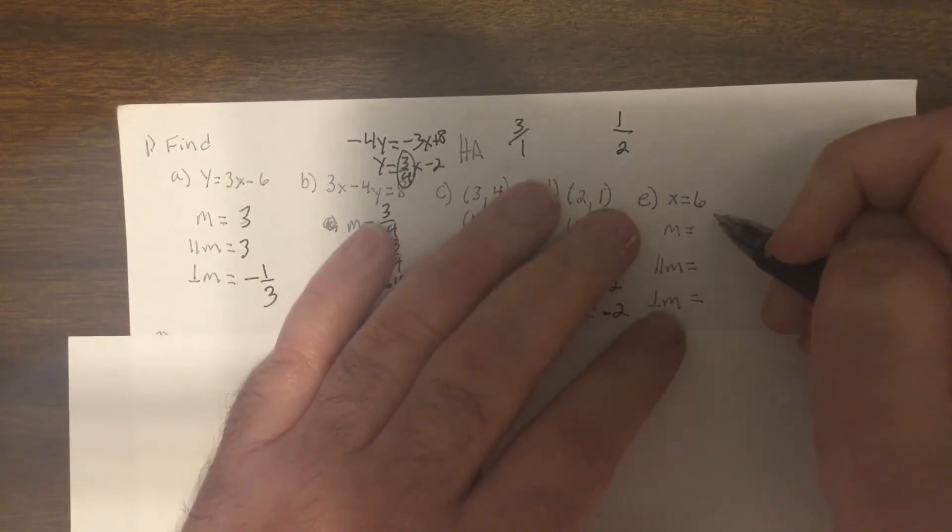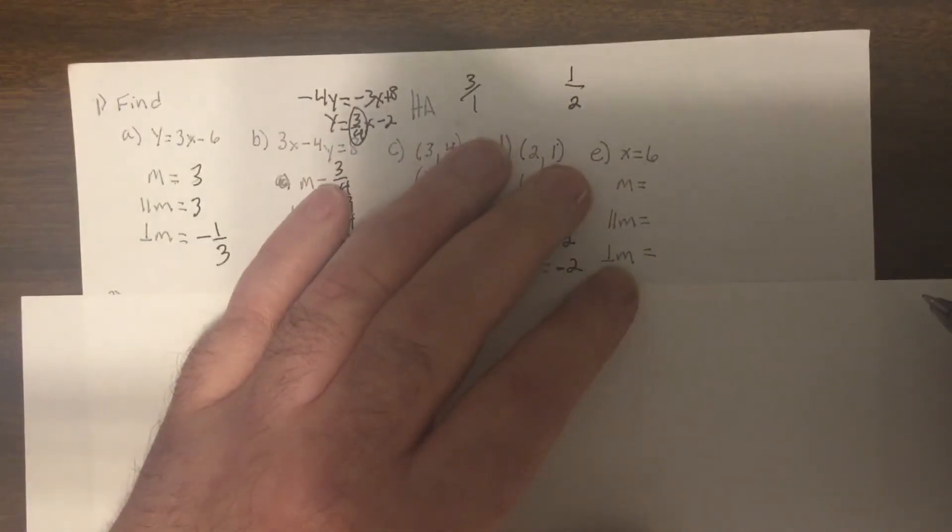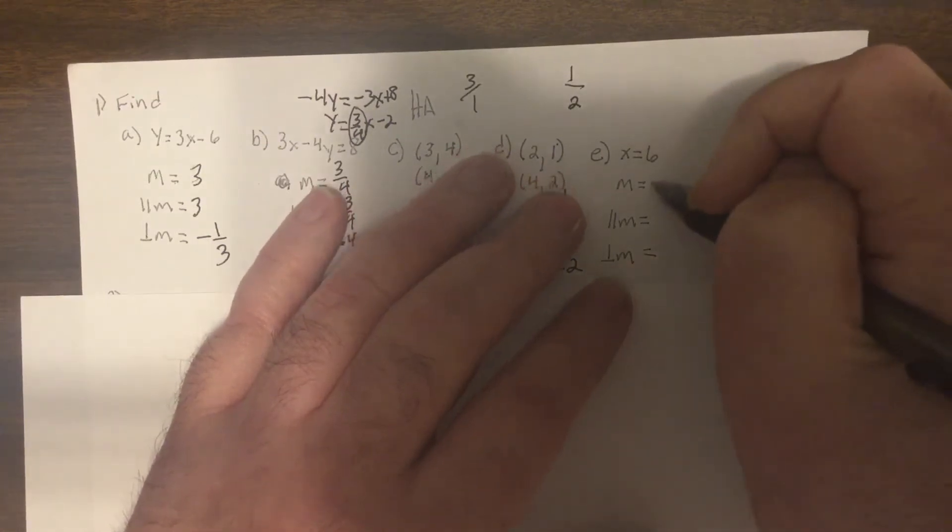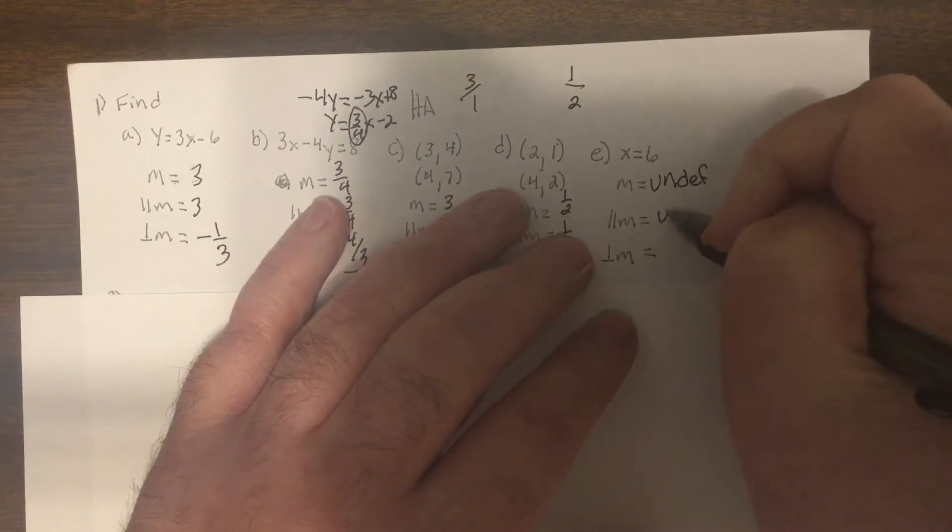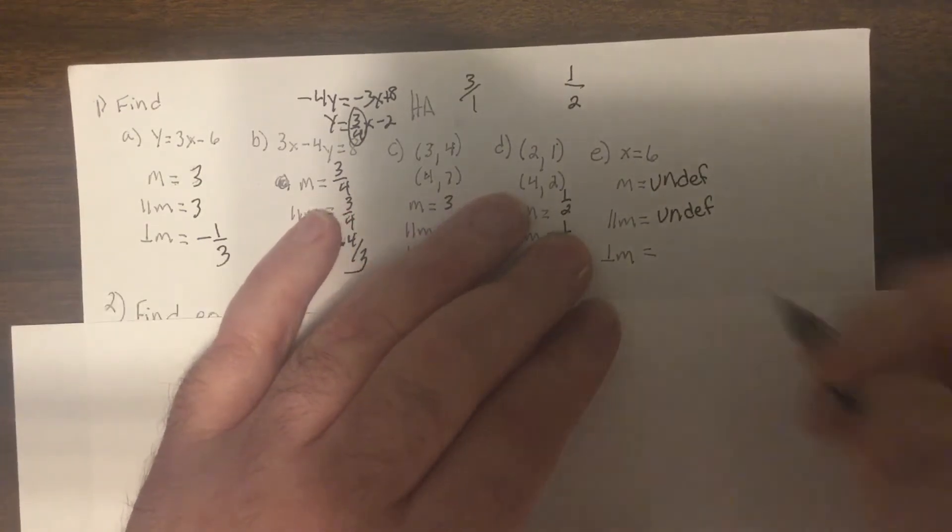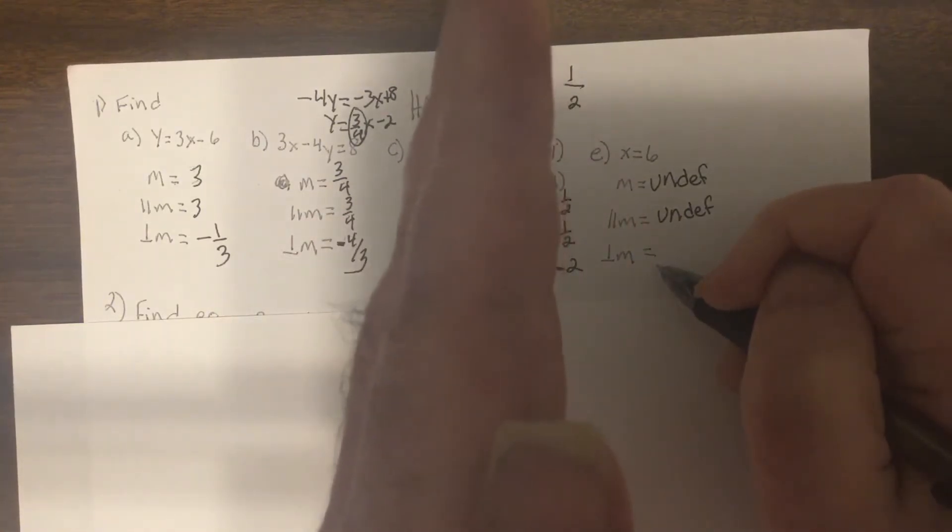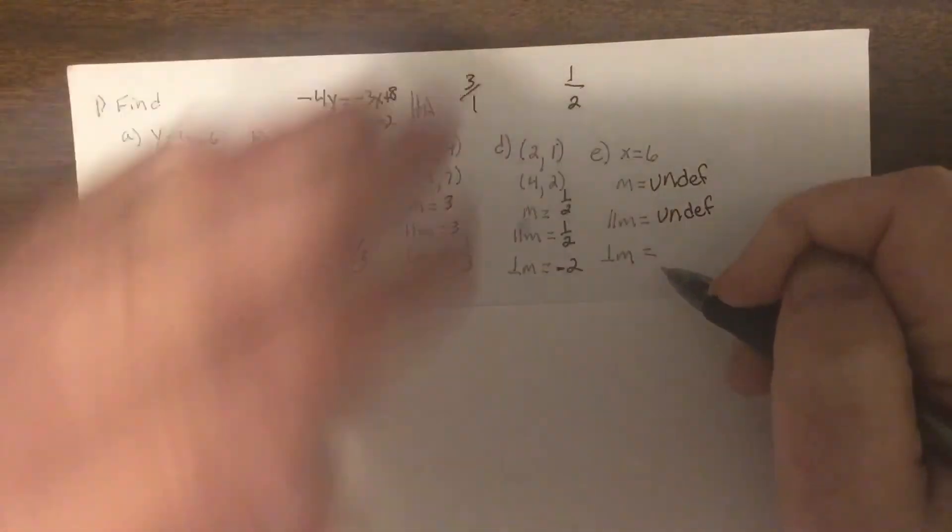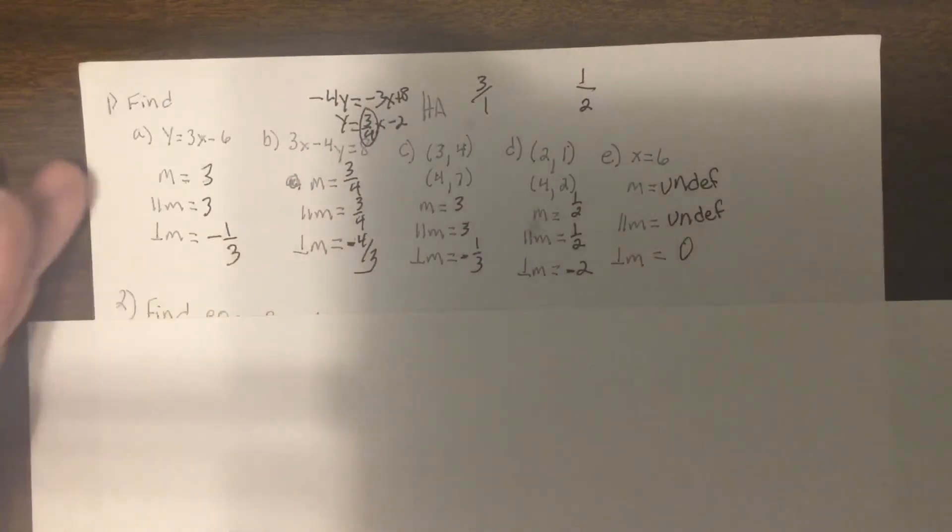X equals a number is a vertical line whose slope is always undefined. So slope would be undefined. So the parallel is undefined. Parallel would also have to be a vertical line. So the perpendicular you'd have to go from vertical to horizontal which slope is 0. Yay!